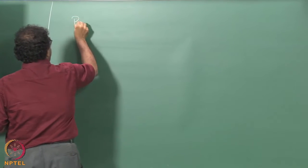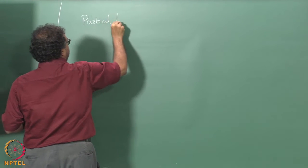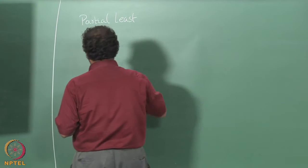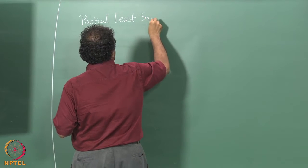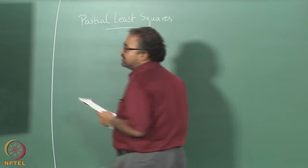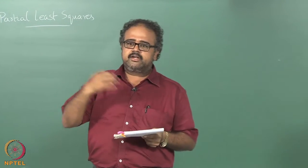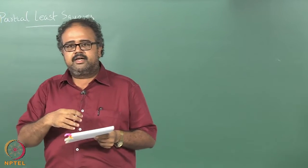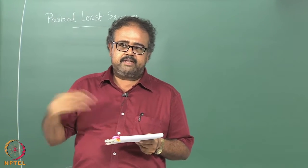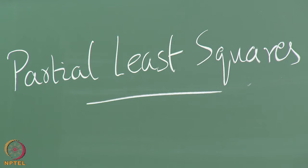We will continue from where we left off as I promised. We were looking at linear regression and we looked at subset selection, then we looked at shrinkage methods, and then finally we came to derived directions.